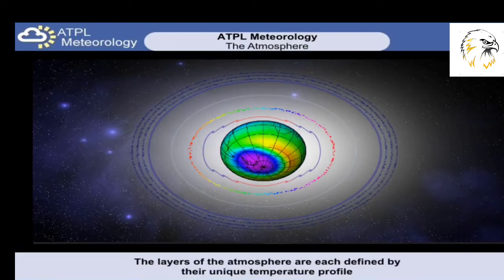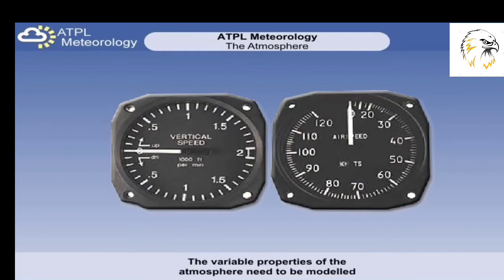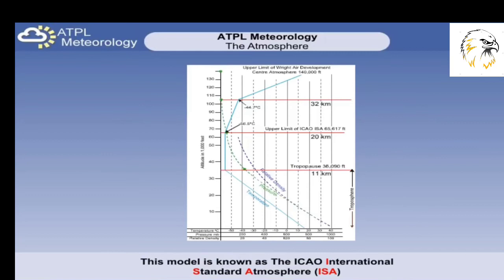All the layers we have analyzed have been defined by their unique temperature profiles. However, most of our flying and our weather is contained within the first two layers of the atmosphere, namely the troposphere and the stratosphere. Within these two layers we have many properties which are important to us, like density, pressure, and temperature. However, our atmosphere is so very variable from day to day, it's been necessary to construct a model atmosphere for help in calibration of instruments and aircraft testing. This model atmosphere is known as the International Standard Atmosphere, or ISA.